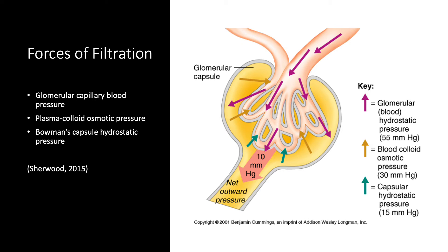The second force involved is the plasma colloidal osmotic pressure, also known as πP. This is caused by the unequal distribution of plasma proteins across the glomerular membrane. Because plasma proteins cannot be filtered, they remain in the glomerular capillaries but not in Bowman's capsule. The resulting tendency for water to move by osmosis down its concentration gradient from Bowman's capsule into the glomerulus opposes glomerular filtration. This opposing osmotic force averages 30 mmHg, which is slightly higher than across other capillaries, because more water is filtered out of the glomerular blood, making the concentration of plasma proteins higher than elsewhere.